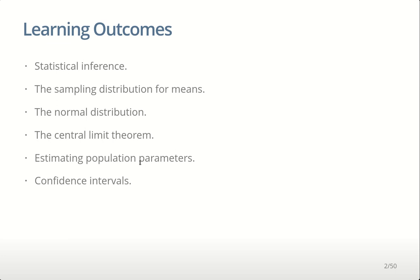To do that, we're going to look at the sampling distribution, which is essentially what happens when we take more than one sample. When we do statistical inference, we look at our one sample and imagine all of the other possible samples we could have got. That helps us get an idea of how much uncertainty we should add when we make that move back to the population.